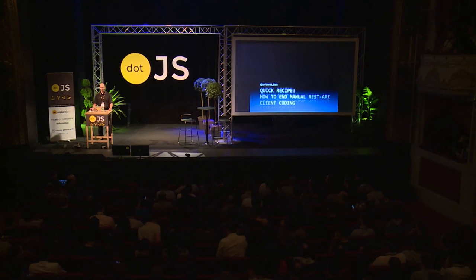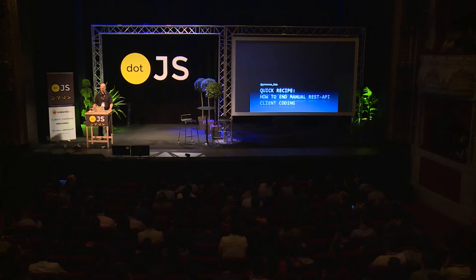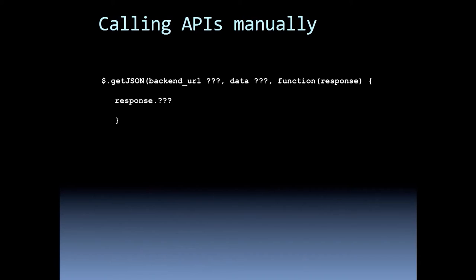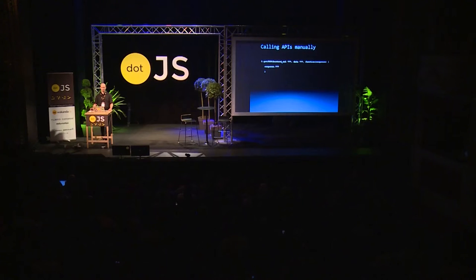I want to show you how you can end manual REST API client coding today. Right now it looks like this: you have to call APIs manually, you have to know where it resides, you have to know about the request and the response, you have to know all the parameters and type them in. It's 2015 and I think this should be changed.